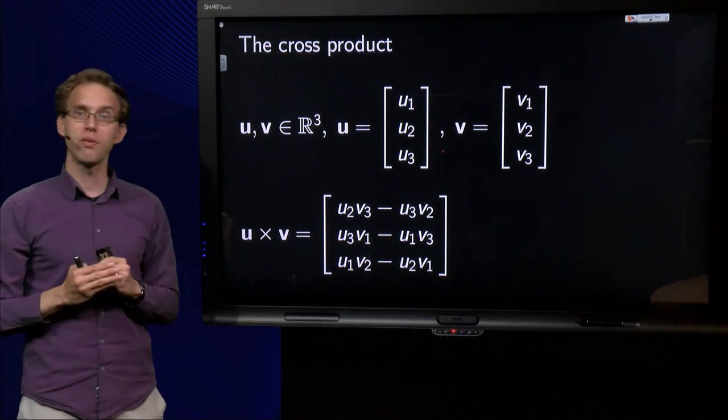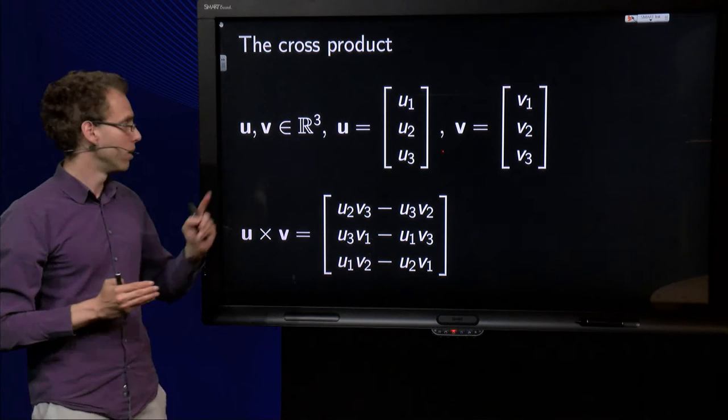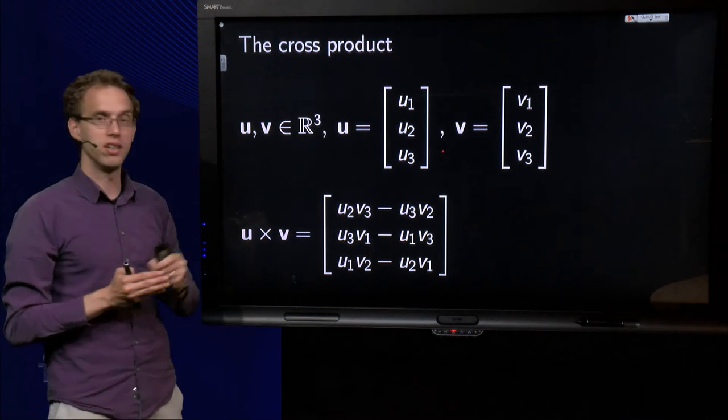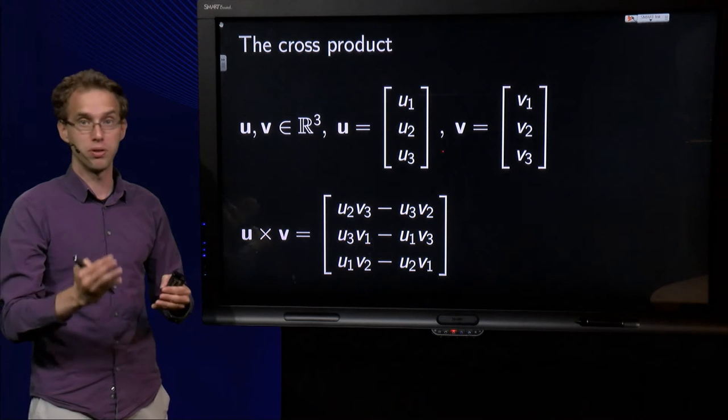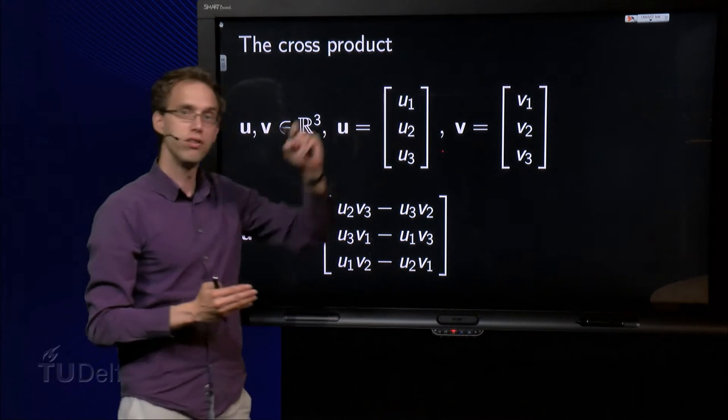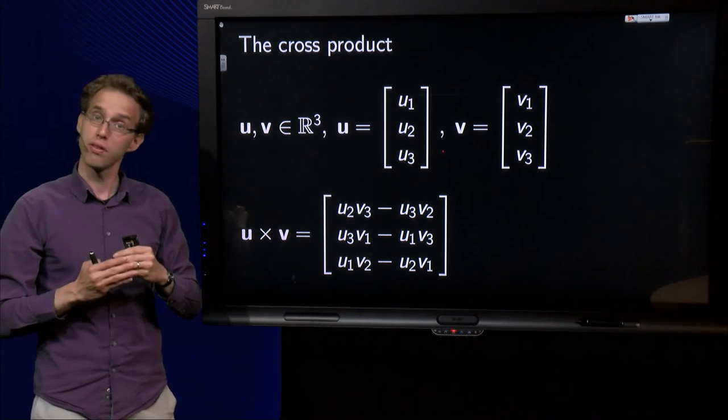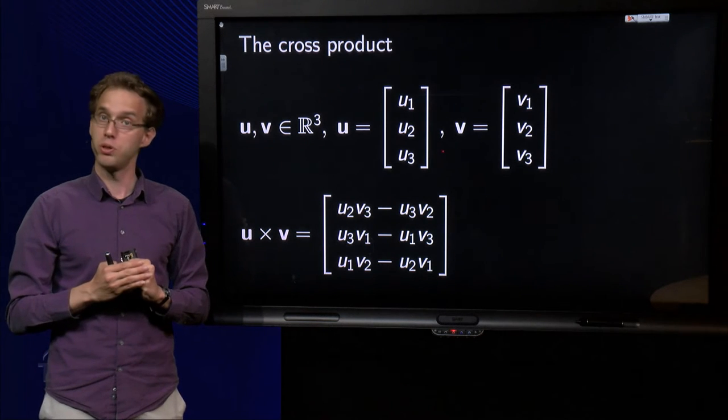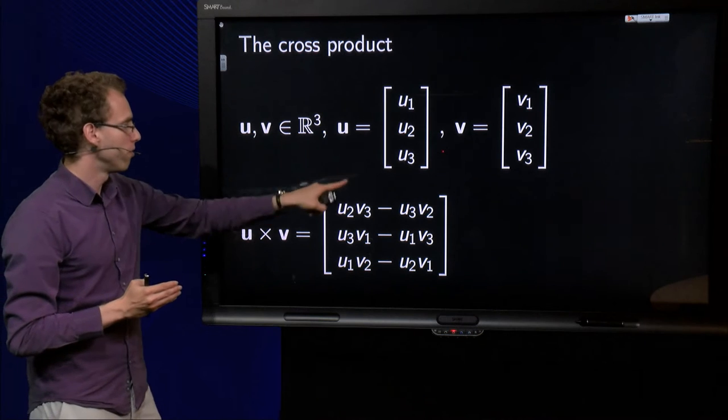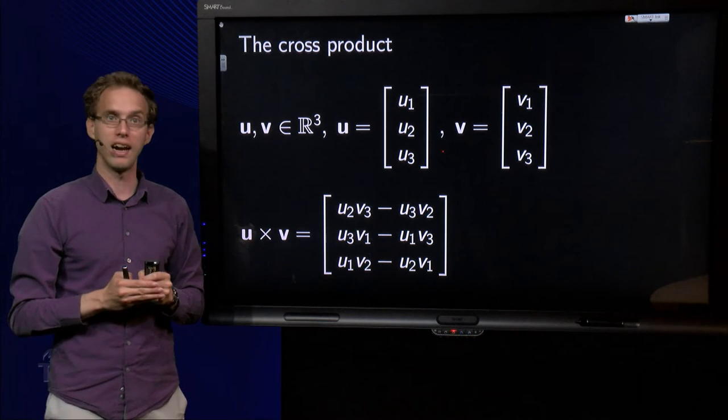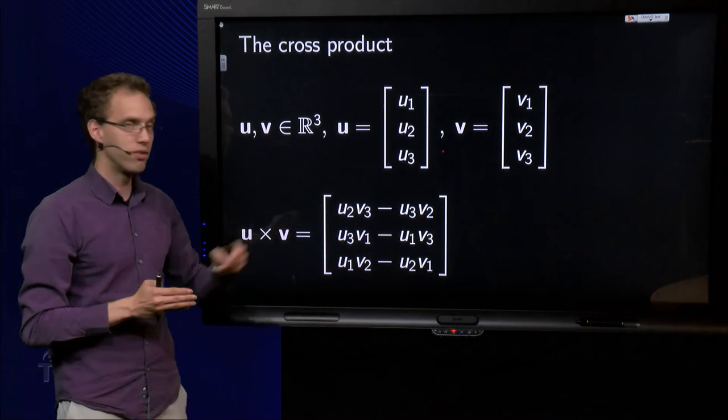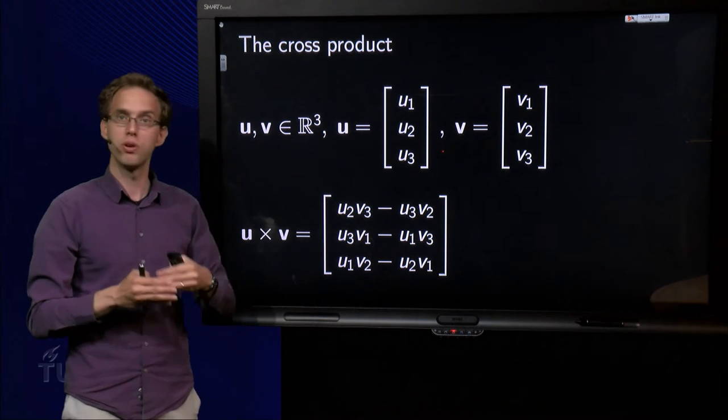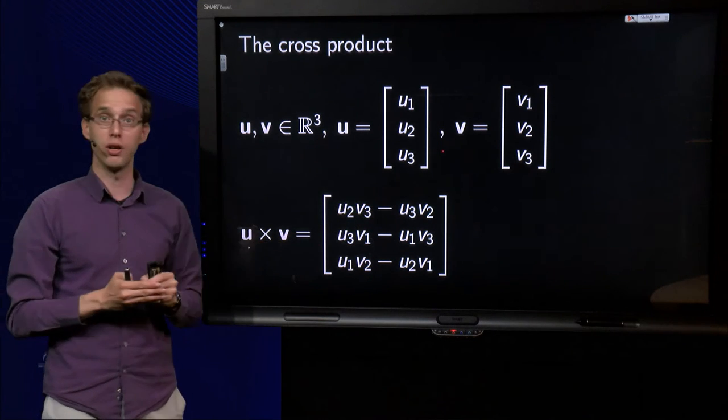Here we have two vectors in R3, u and v. Written down in their components, u1 up to u3 for u, and v1 up to v3 for v. And how do we compute u cross v? We form the following vector: u2 times v3 minus u3 times v2 is the first component, and you can see the other two components.